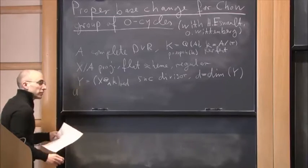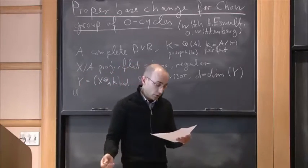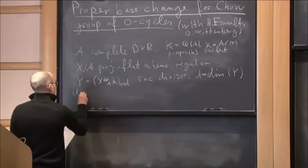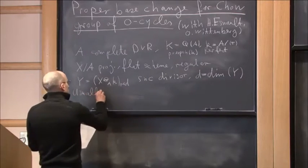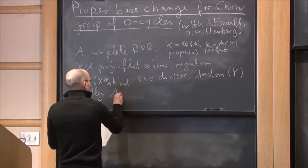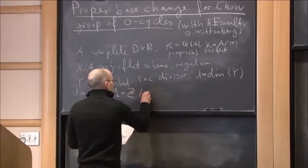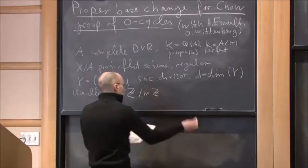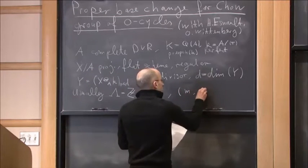By λ, we denote a ring of coefficients of our tau groups and motivic homology groups. Usually, if not mentioned otherwise, our ring of coefficients λ is just Z mod mZ with m prime to p.